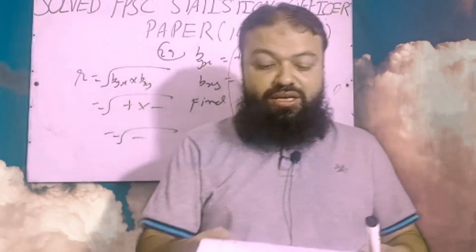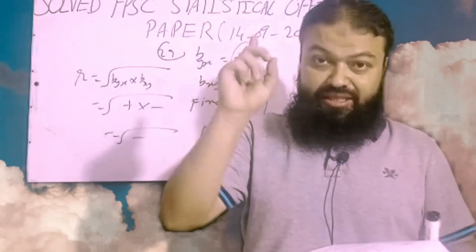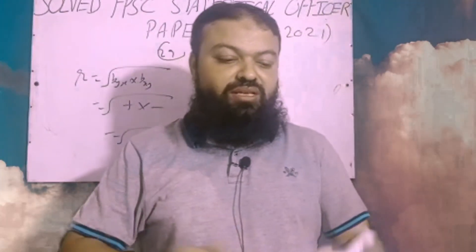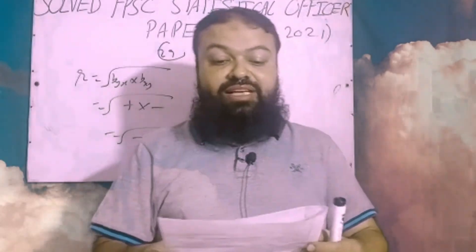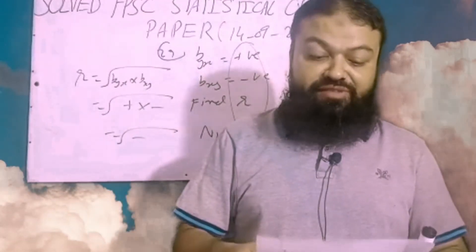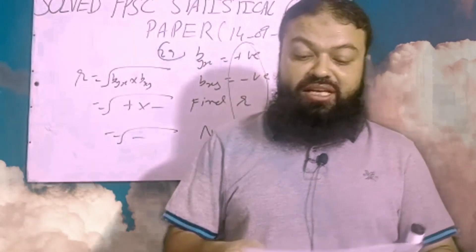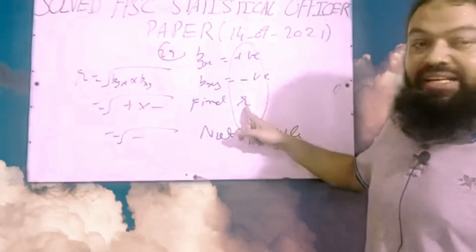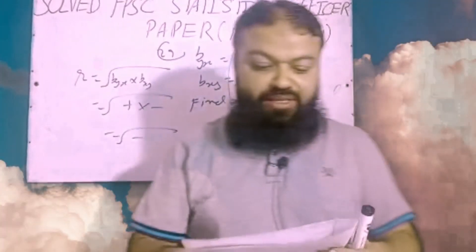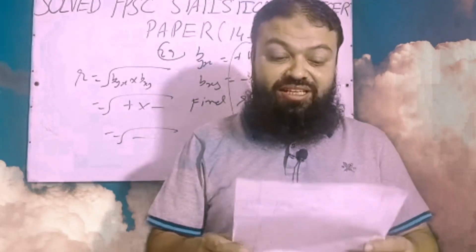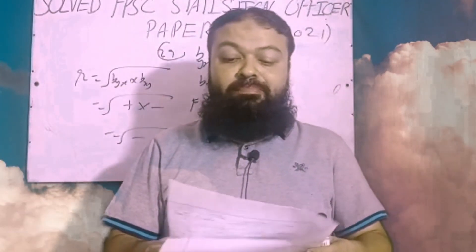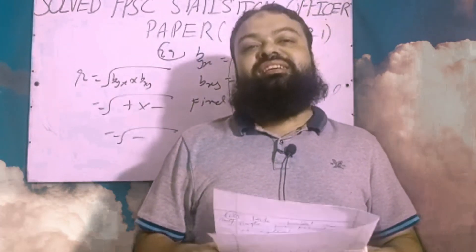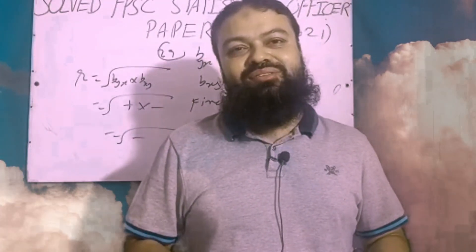Question number thirty: the coefficient of determination, r², is always positive — positive is the correct option. Question number thirty-one: if the coefficient of correlation is positive, then the slope of the regression line is also positive. If r is negative, b will also be negative. Question number thirty-two: base-year weighted index is used in Laspeyres index numbers — Laspeyres index numbers is the correct option. Assalamu Alaikum.